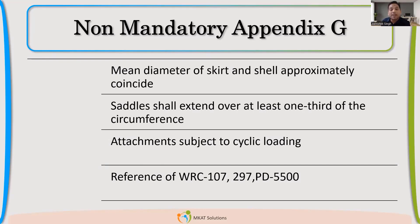This is the clause from where it is taken — this is the guideline given by the code. Any attachments which are subjected to cyclic loading require special care. For example, we may have an agitator mounted on the pressure vessel. The agitator will always try to give cyclic loading to the equipment, so we need to design for that cyclic loading as well.